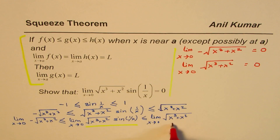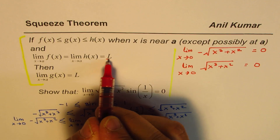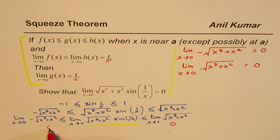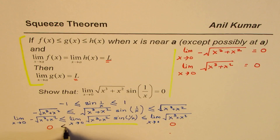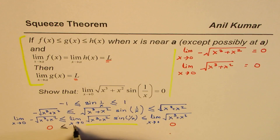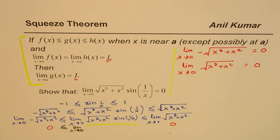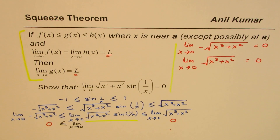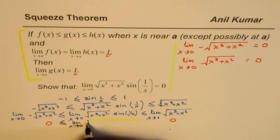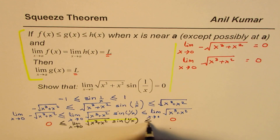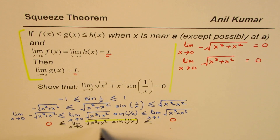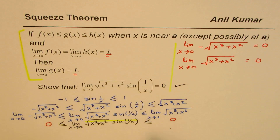So what we notice is that these two boundary limits are both approaching L, a real number, which is 0. These two limits are 0. Therefore we can say that the limit of square root of (x³ + x²)·sin(1/x) is also between these two zeros, and so we can say that this limit is equal to 0.